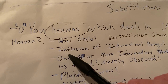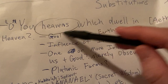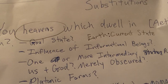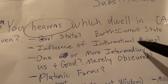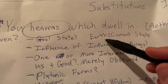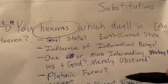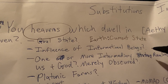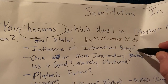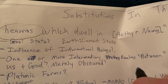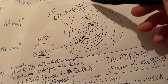Another way I think about heaven is these informational beings — you could call them angels, that's definitely a traditional name for them. Really, the angels provide us information, and they will also directly influence Earth from a maybe less material place or state or realm. Another way to think about it is maybe it's just one or more of these intermediary realms between us and God that's merely obscured.